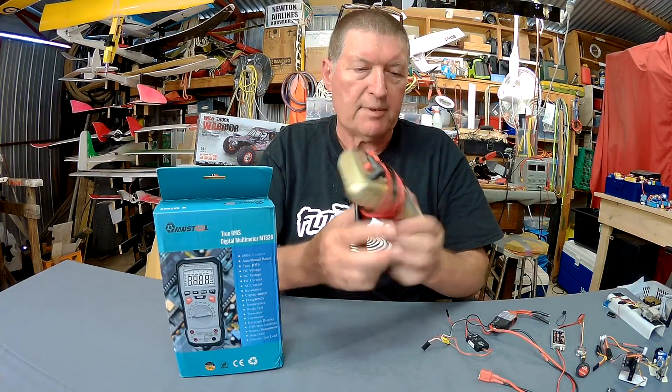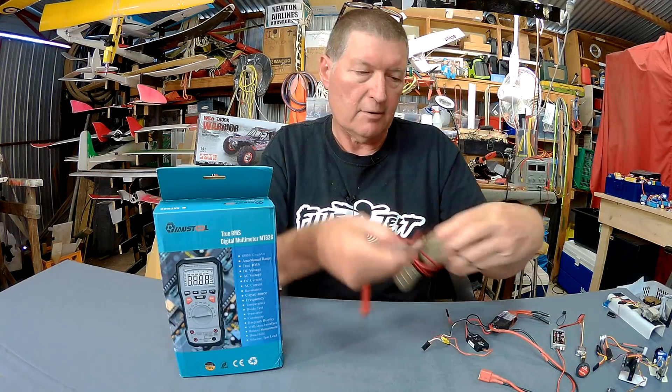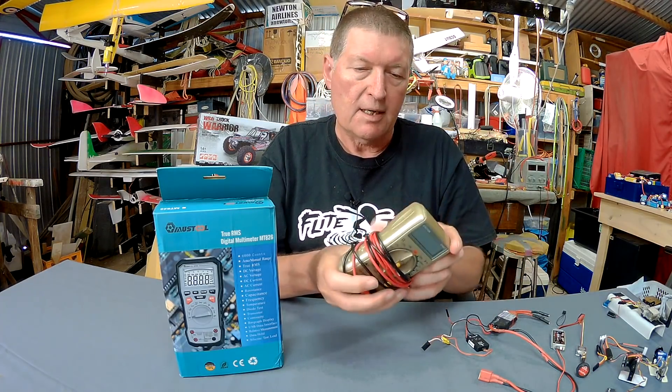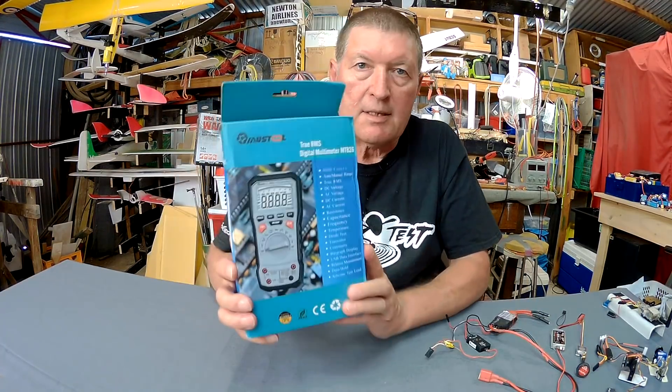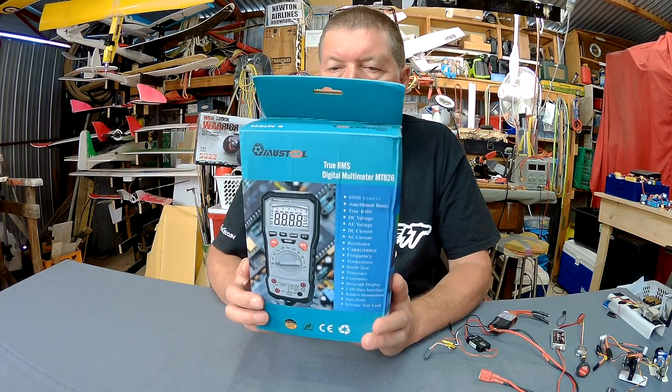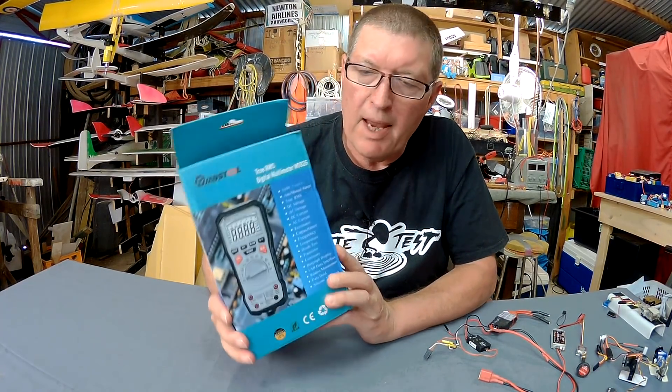So you're going to need a multimeter. Up till now, I've been using this cheapy Digitor multimeter. I've had that for years and years and it works okay, but I reckon it's time to upgrade. So here we have the Mustool True RMS Digital Multimeter MT826 from Banggood.